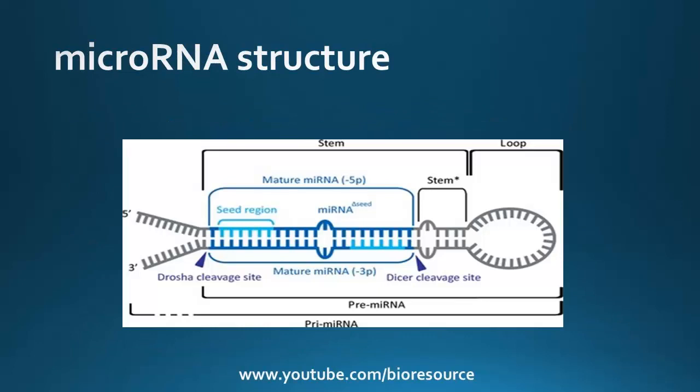Now let's look at the structure of miRNA. A mature miRNA molecule is a single-stranded RNA of 19 to 24 nucleotides in length, with a defined seed region across nucleotides 2 to 7 or 2 to 8.